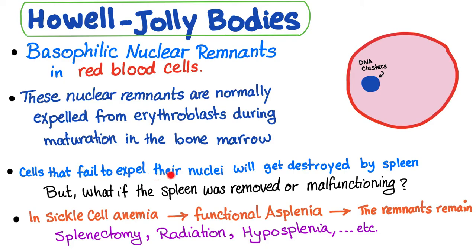Cells that fail to expel their nuclei will get destroyed by the spleen. There are macrophages waiting in the spleen to destroy any abnormally shaped cells. But what if the spleen was removed, such as in splenectomy, or malfunctioning, such as autosplenectomy in sickle cell disease?